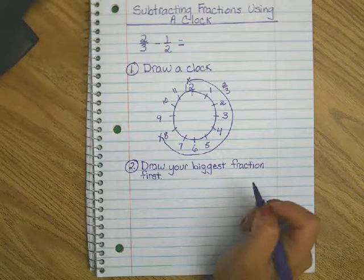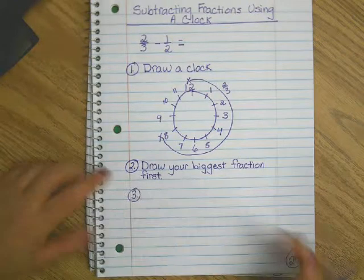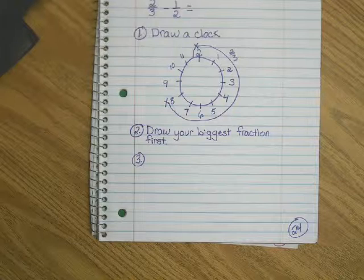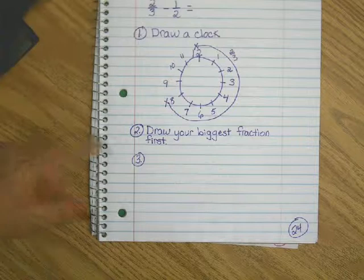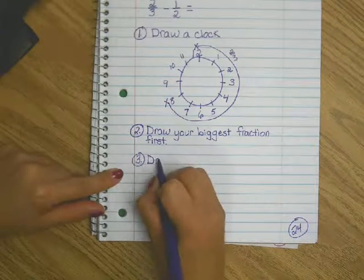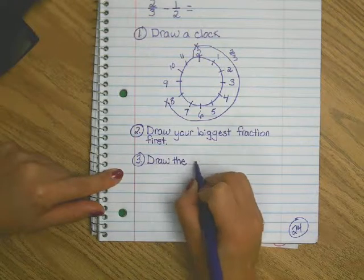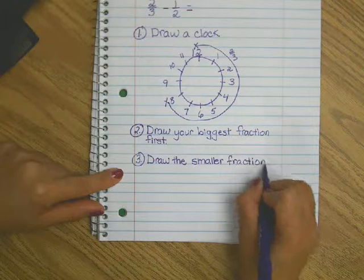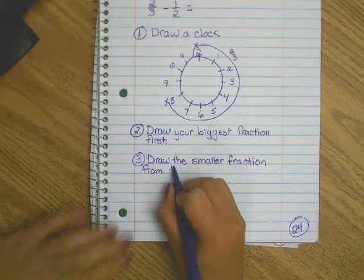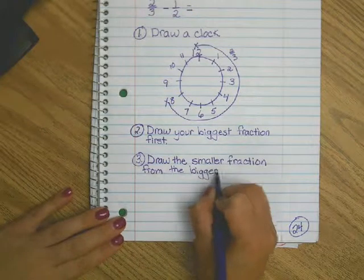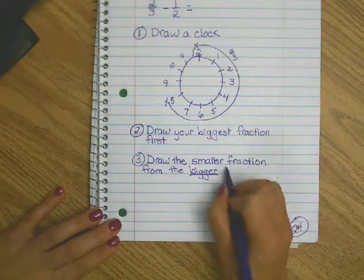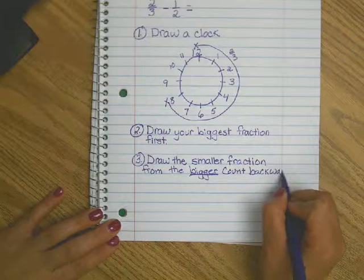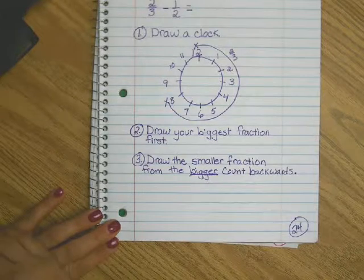Step 3, draw the smaller fraction from the bigger, count backwards. Let's write that down and then I'll show you what that means. Underline bigger, count backwards. Okay, are you guys ready? Yes.